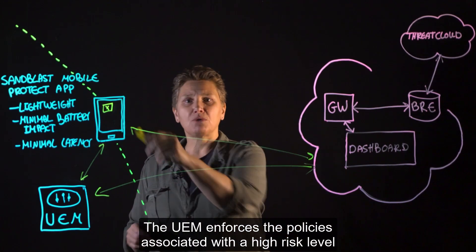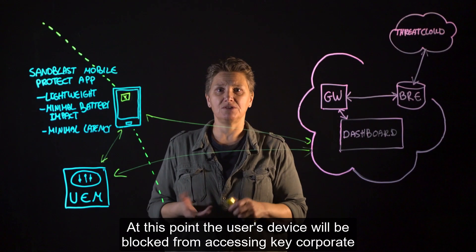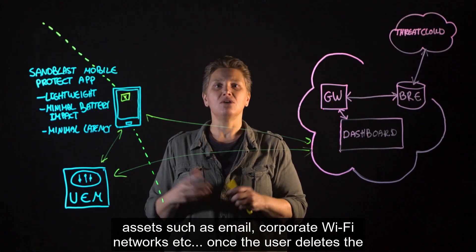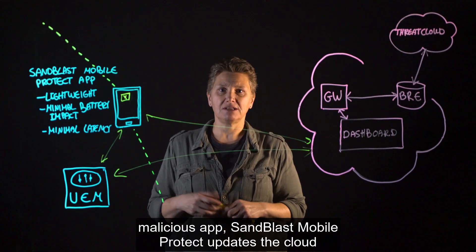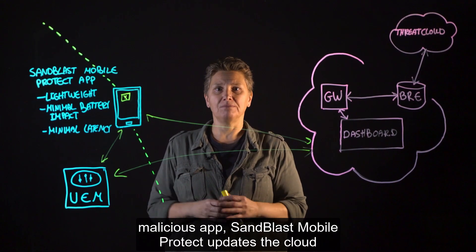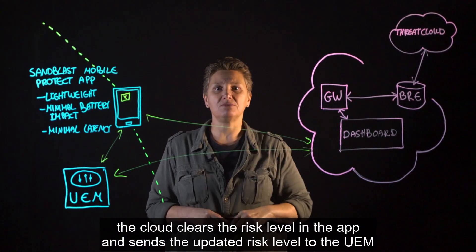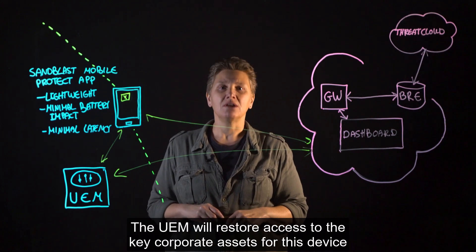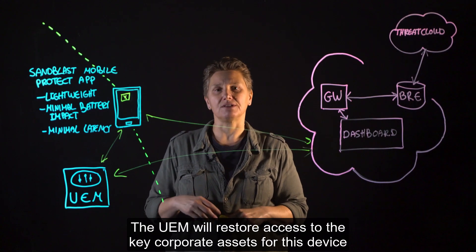The UEM enforces the policies associated with a high risk level. At this point, the user's device will be blocked from accessing key corporate assets such as email, corporate Wi-Fi networks, etc. Once the user deletes the malicious app, Sandblast Mobile Protect updates the cloud, and then the cloud clears the risk level in the app and sends the updated risk level to the UEM. The UEM will restore access to the key corporate assets for this device.